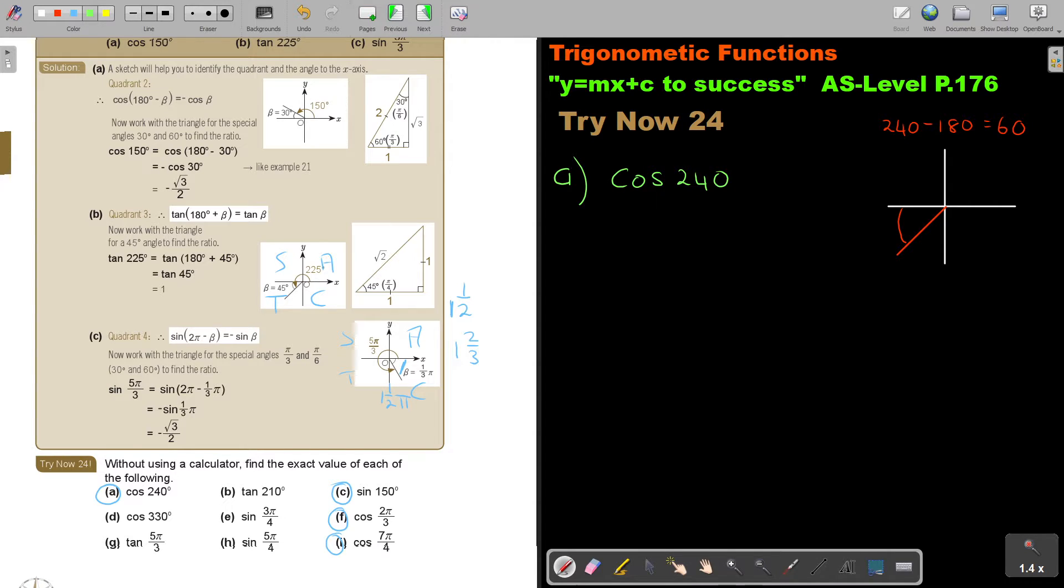So, if I'm writing this one, I can write it as cos 180 plus 60 to get that 240. Now, I think of my CAST diagram. What is cos in this quadrant? It's negative. So, it's negative cos 60. Now I can work. And as I said, I just want to remind you this special.